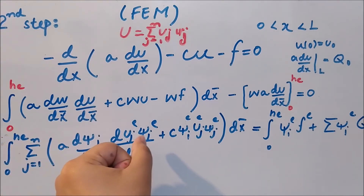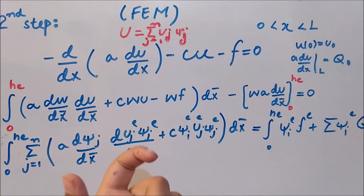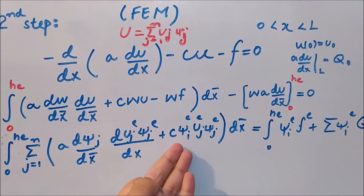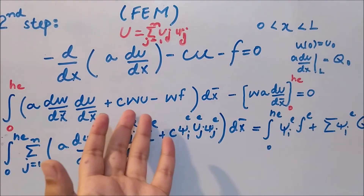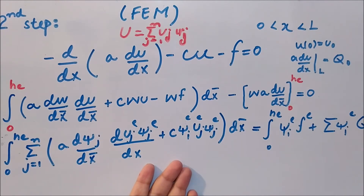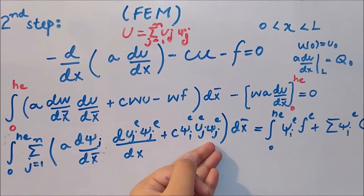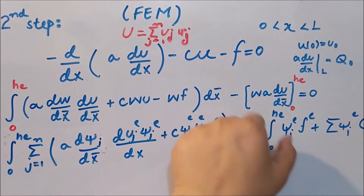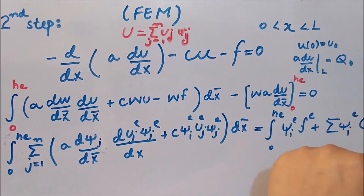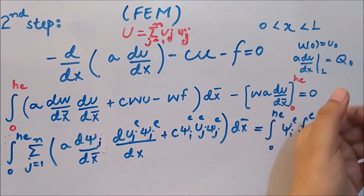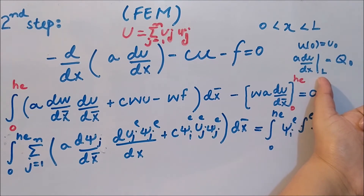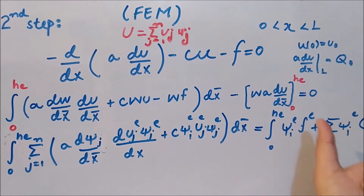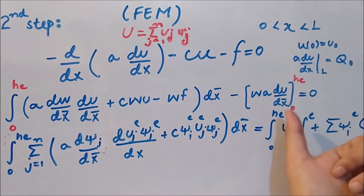In the equation, u_j·psi_j replaces u, and c remains the same as it is a constant specified by the problem. The weight function w is replaced by psi_i, giving w_i, and u becomes u_j·psi_j. We have also applied the boundary condition: a·(du/dx) at the other end of the bar equals q_0, so that term becomes q_j.